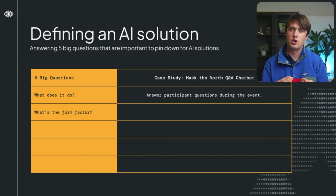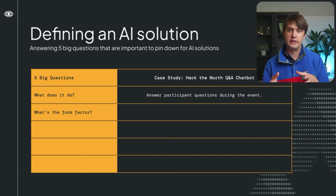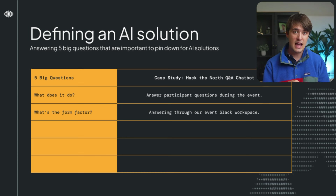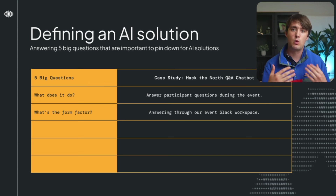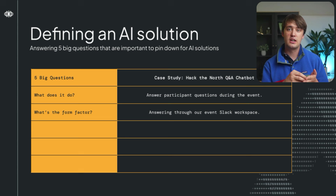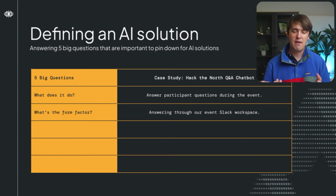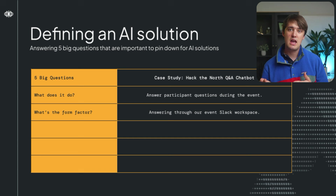Next up: what's the form factor for our AI solution? Where do people interact with it? Could it be on a website, or a phone number you can call? In our case, we decided to use our event Slack so there's a questions channel with answers in threads. It's important to think about where the solution fits into your customer's journey so it's effective and natural — because having a phone number would be really inconvenient for participants.